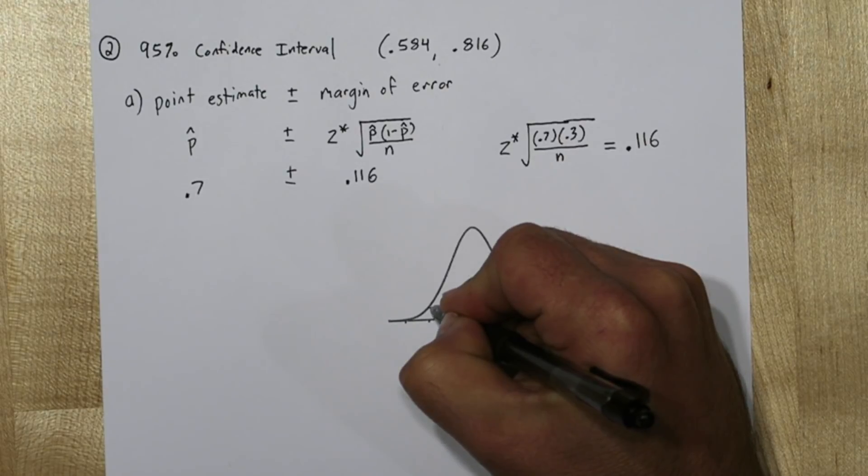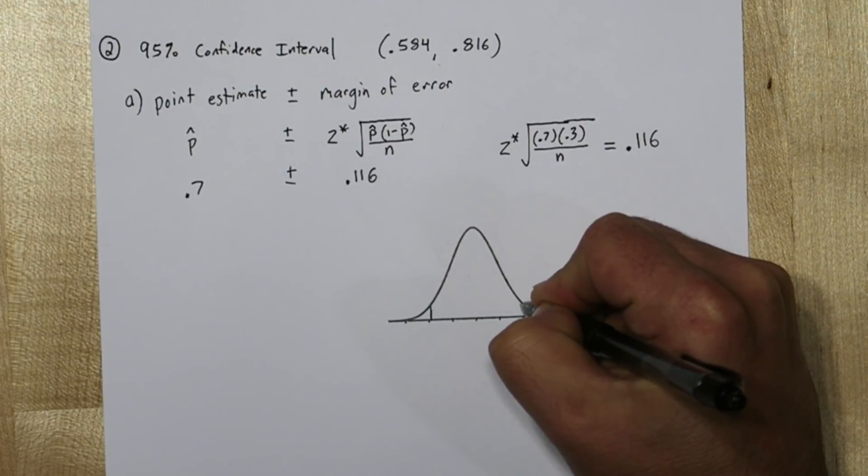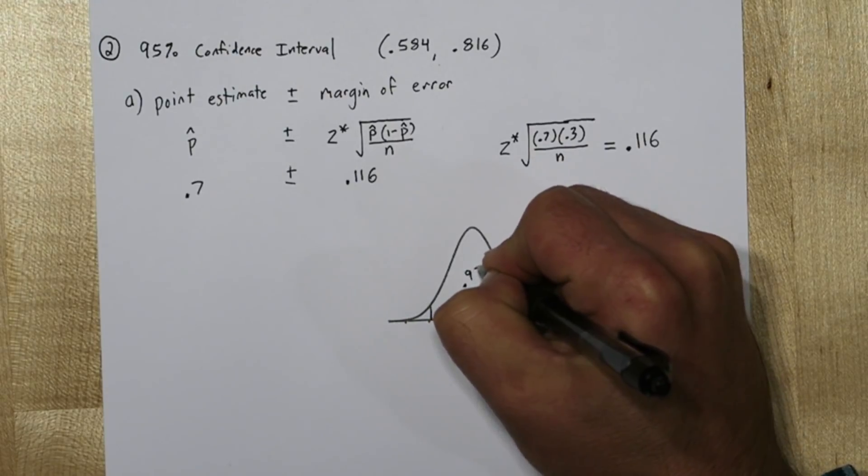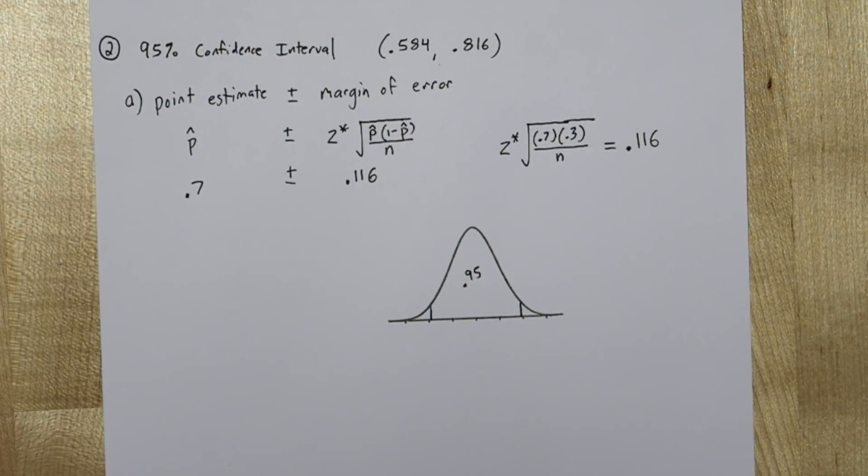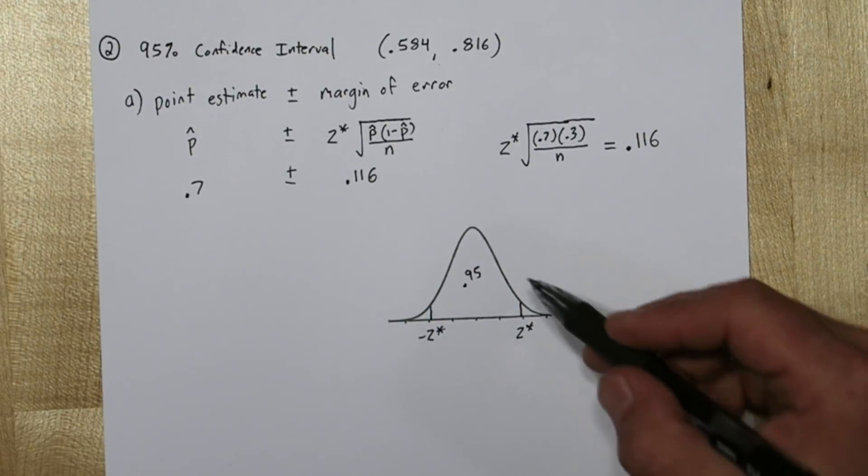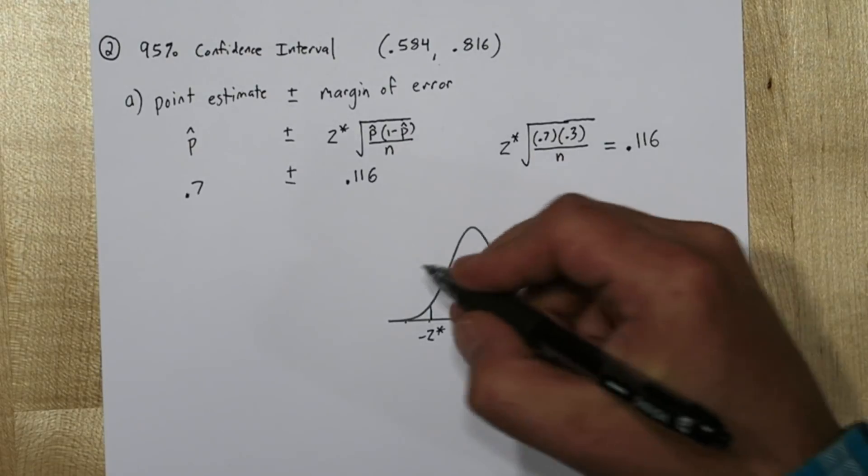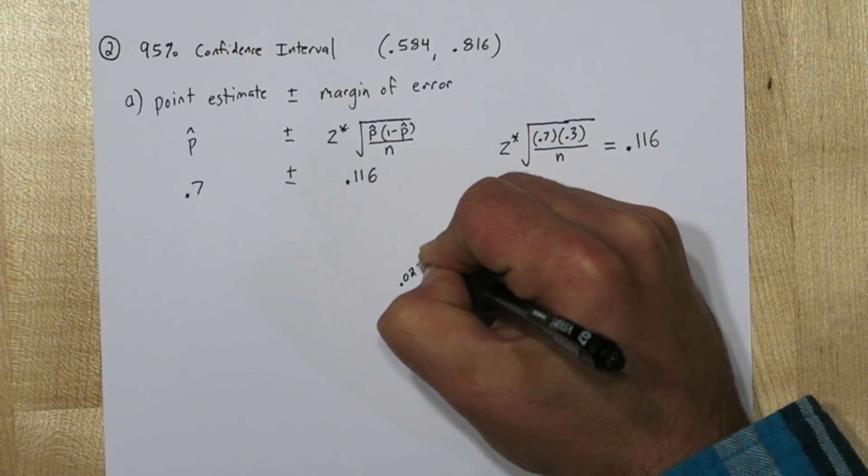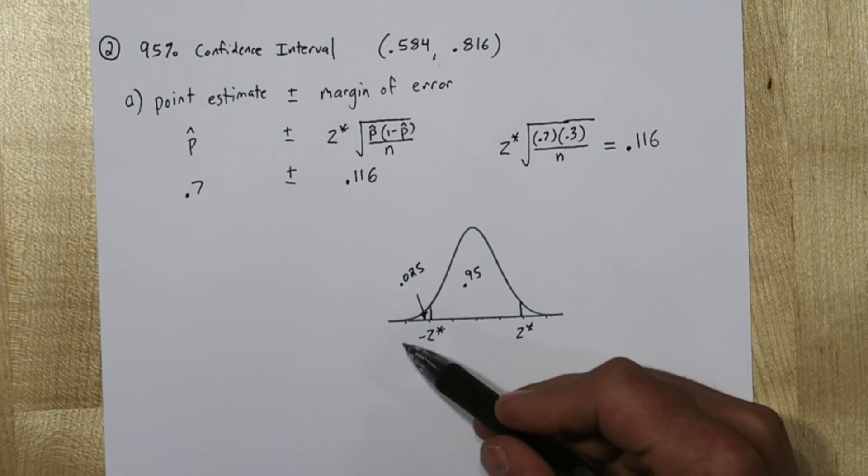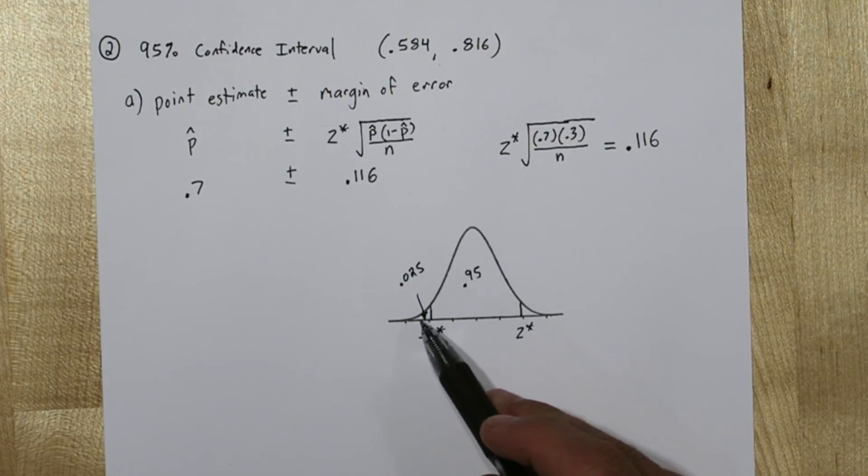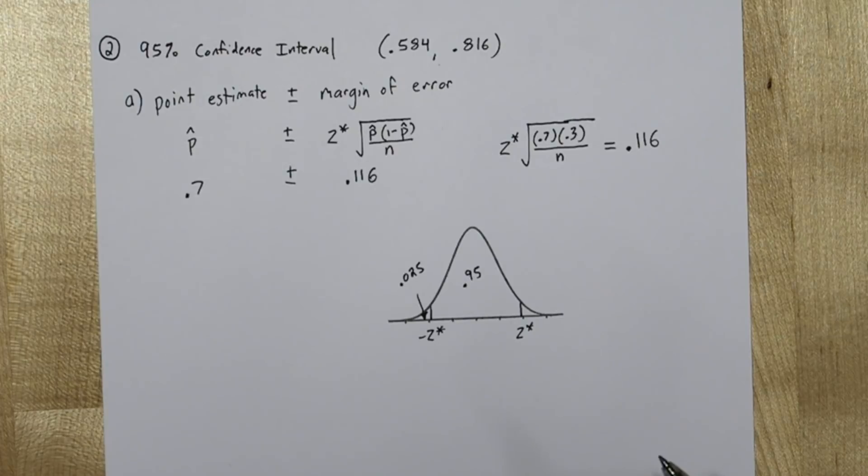So since this is a 95% confidence interval, we want the critical value z-star to be what cuts off the middle 95% of the normal distribution. So we're going to have positive z-star up here and negative z-star down here. Now if there's 95% in the middle, then the area right here must be 0.025, since the area under this entire curve is 1, and the 5% would be split here and here.